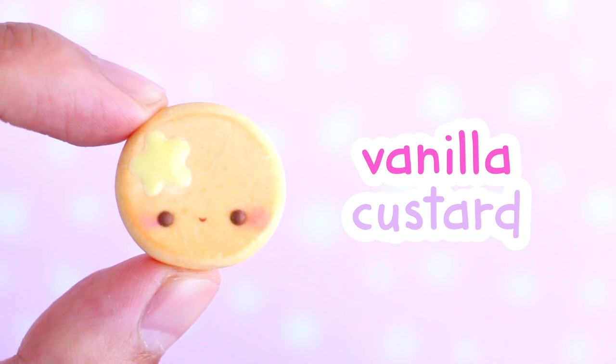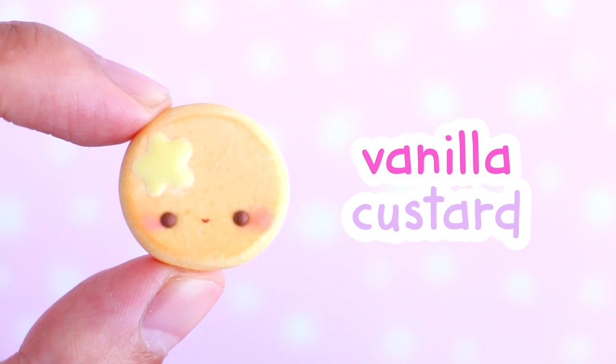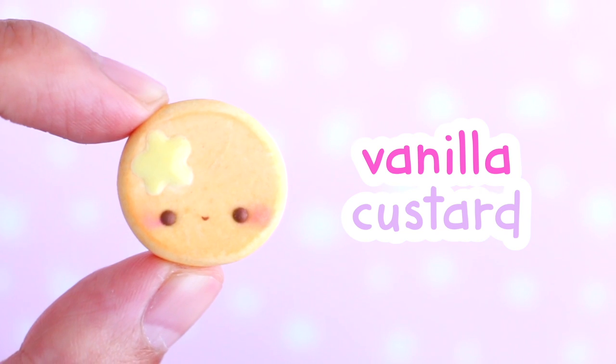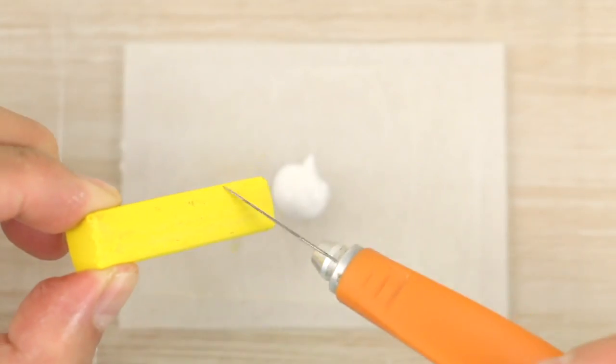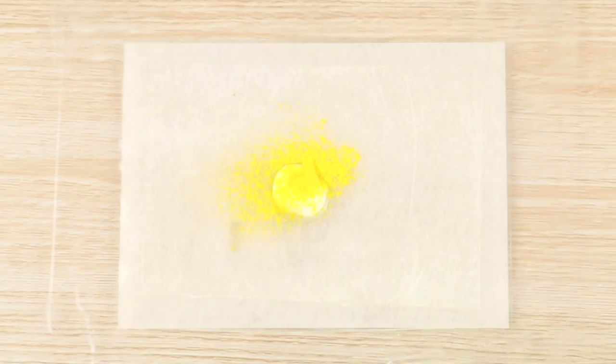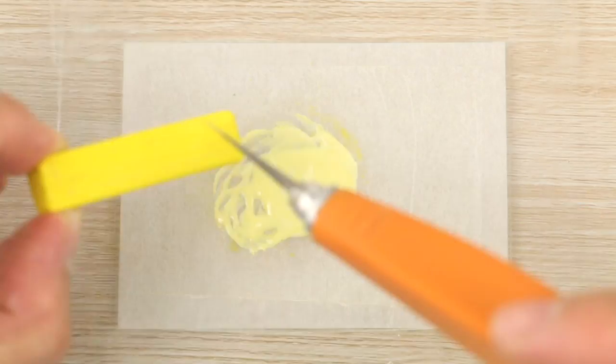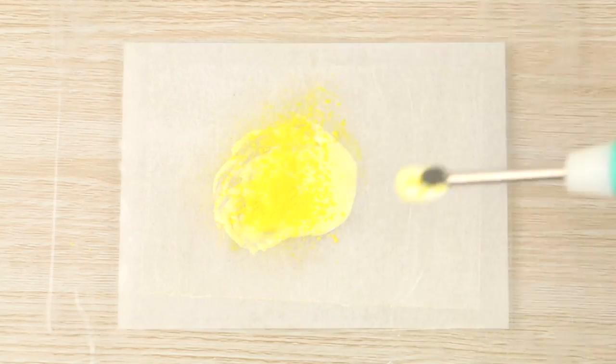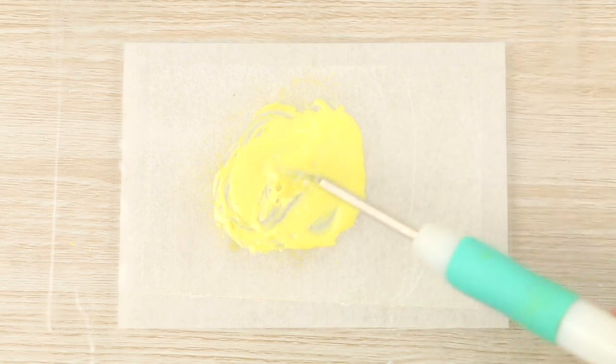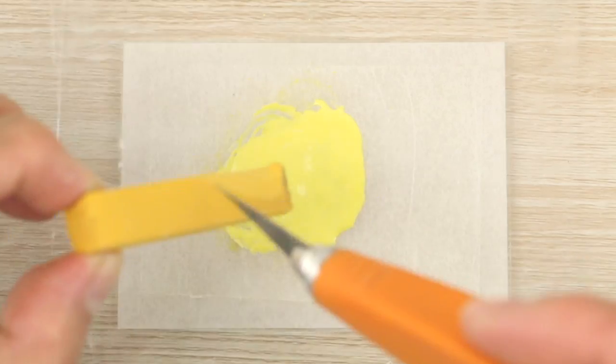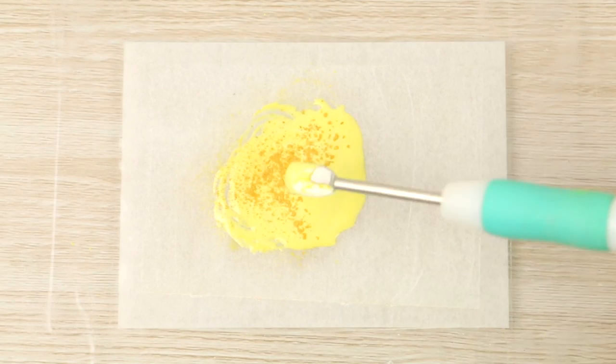And next I'm making some vanilla custard. And this one is super easy. I just squeeze out some white liquid clay and mix in some yellow chalk pastel. And dark yellow until I get a light yellow mixture.